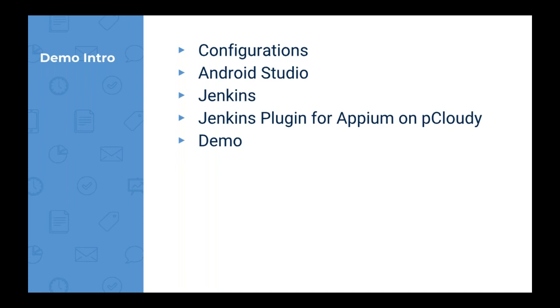Let me summarize again. I'll show you the configurations first, then show the Android project. I'll show how the code is changed and pushed to Git, then how Jenkins pulls the code down. I'll also show what changes you need in the Jenkins plugin for Appium on pCloudy, then the entire build running. Simultaneously we will see a live view in pCloudy of the test being run. Once the test is done, you'll see the report showing what passed, what failed, and the performance metrics.